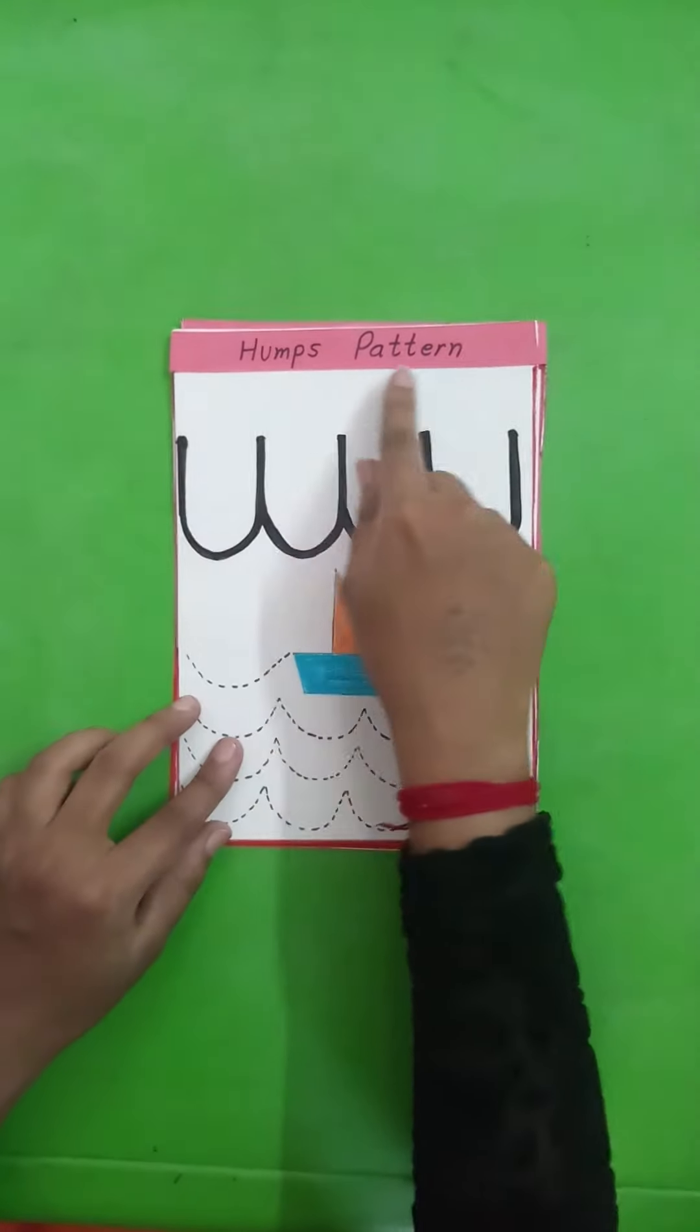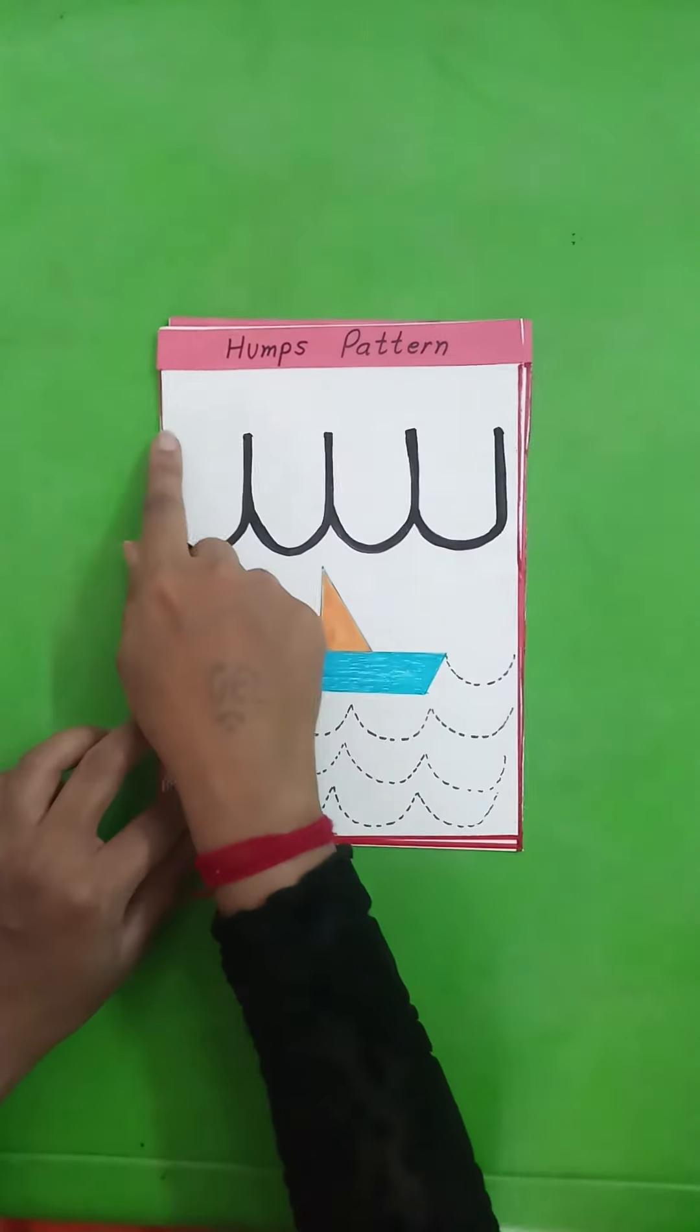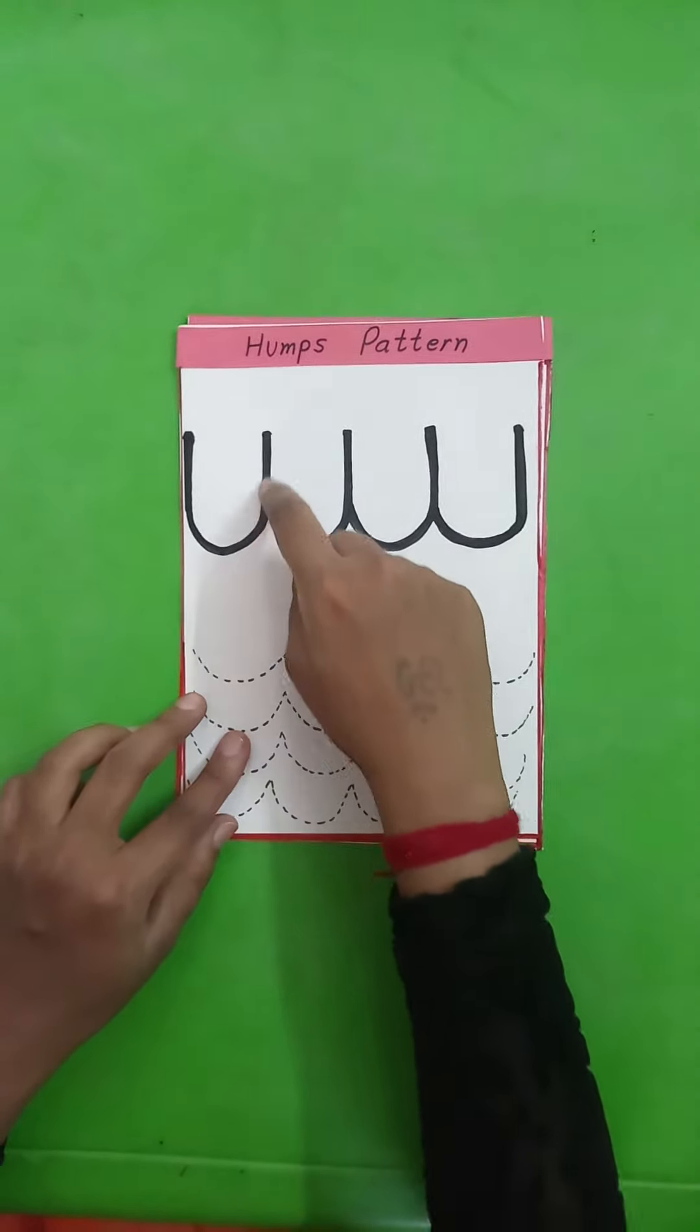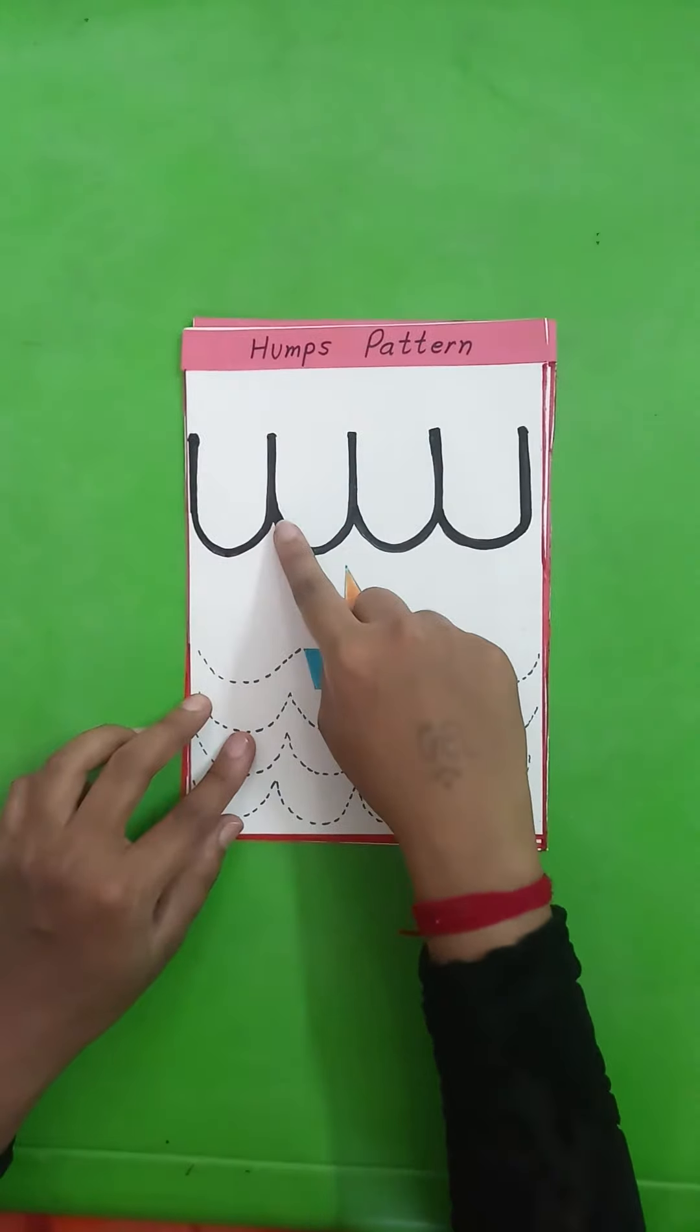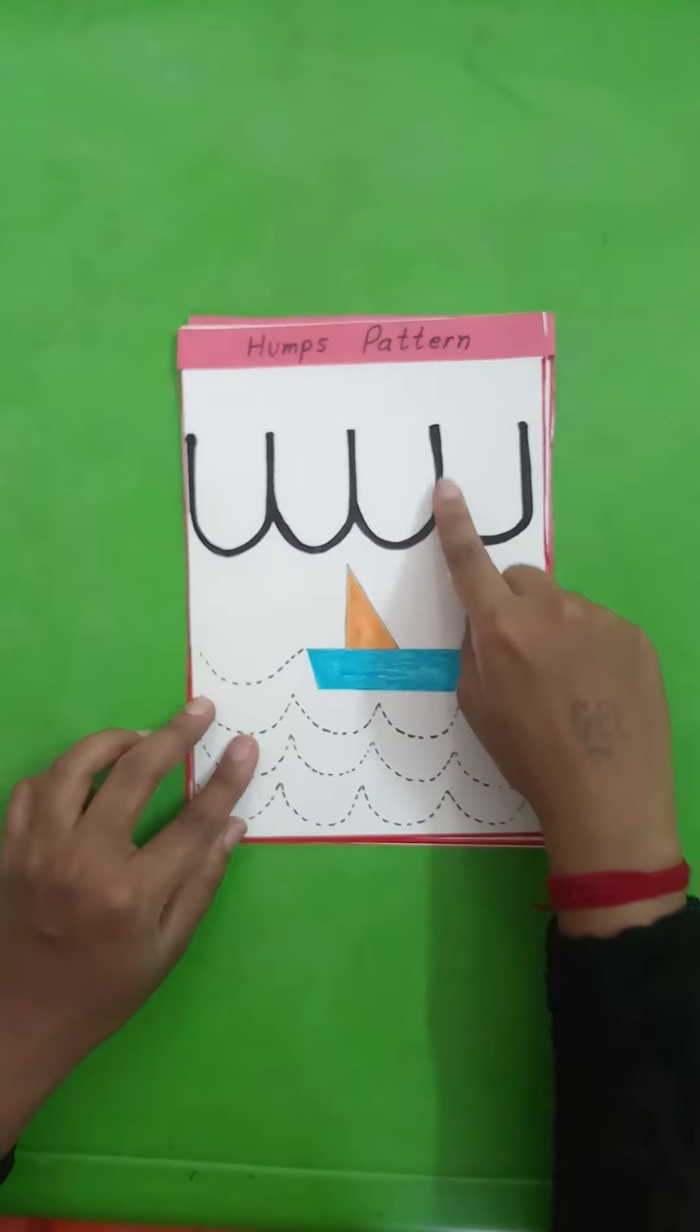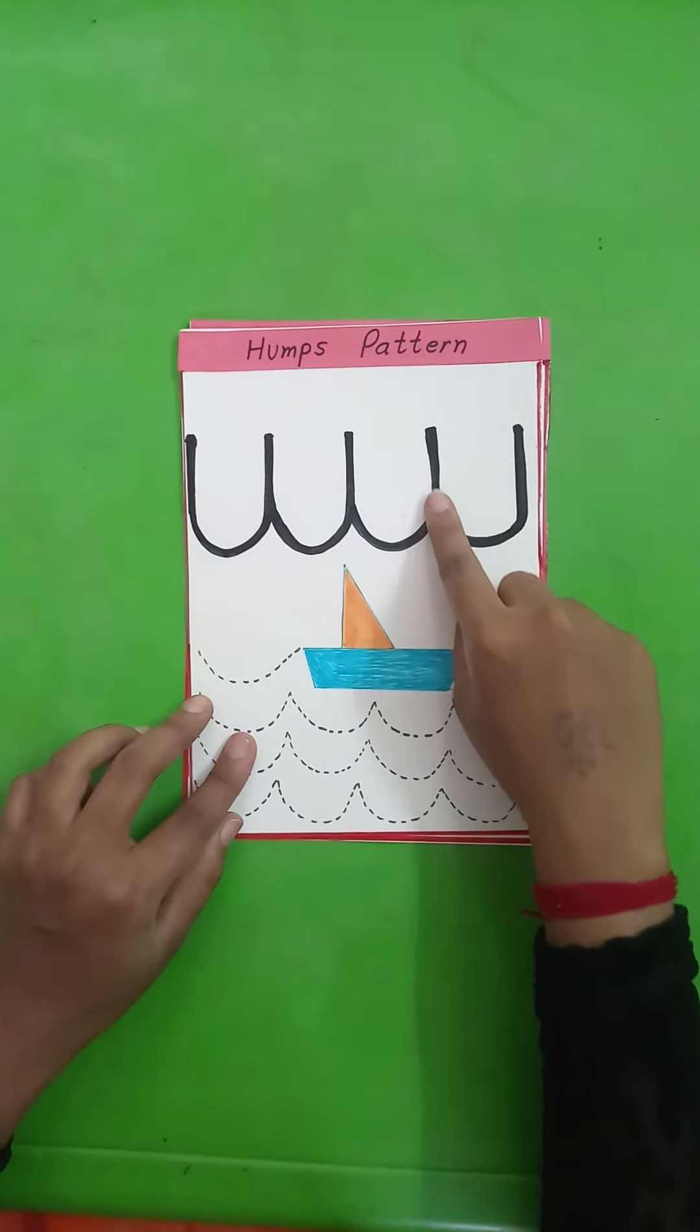Humps pattern. We have to start from top, then go down, make a curve, go up, then again go down. Make a curve, go up, down, down, curve, go up. Again the same process.